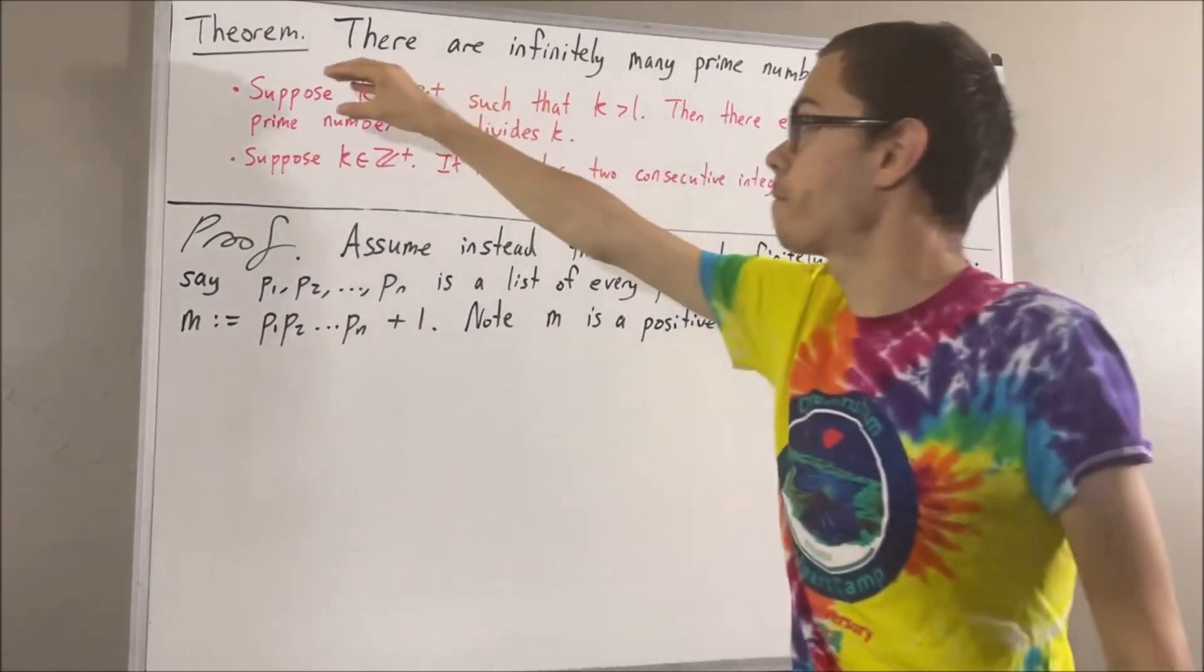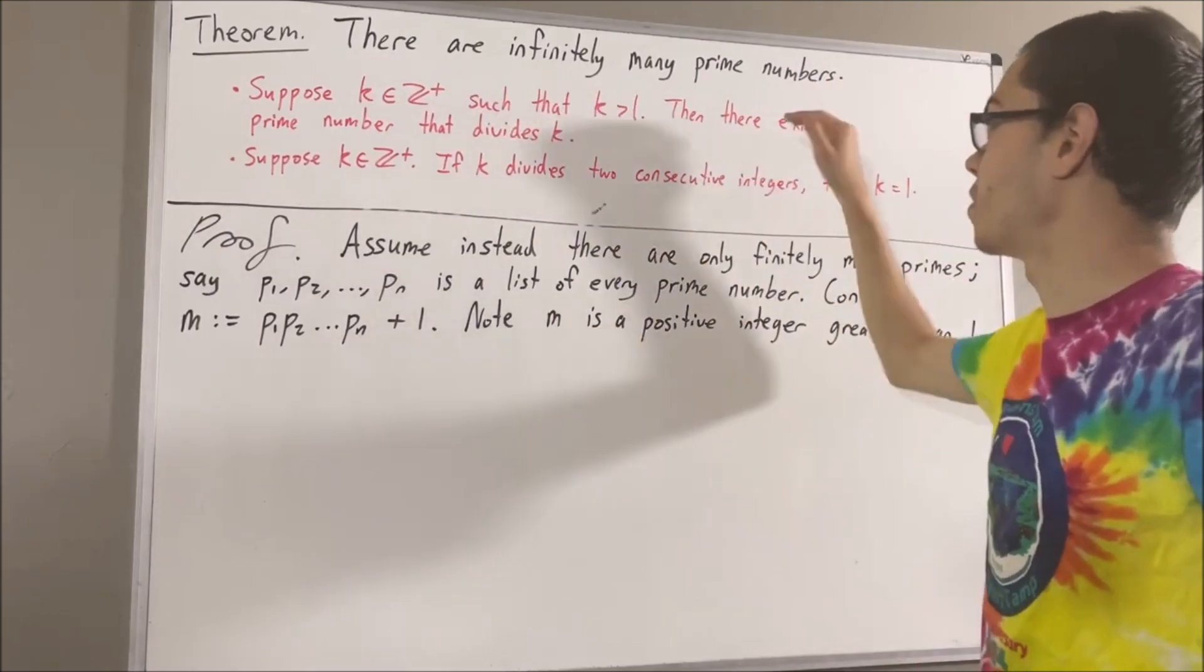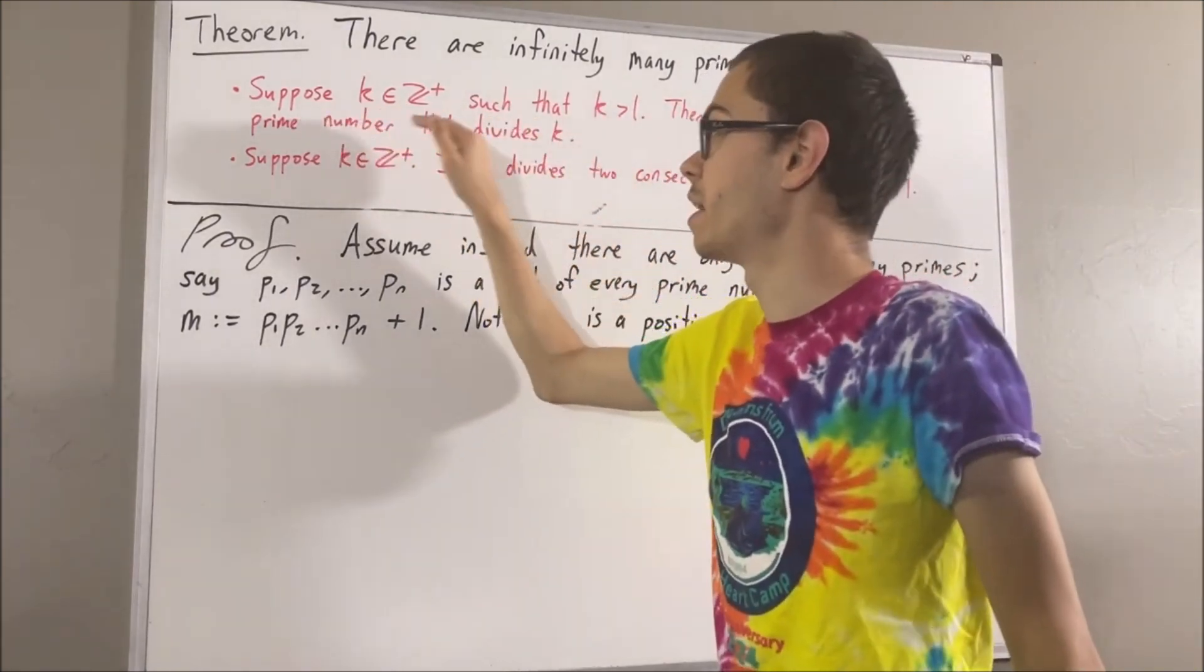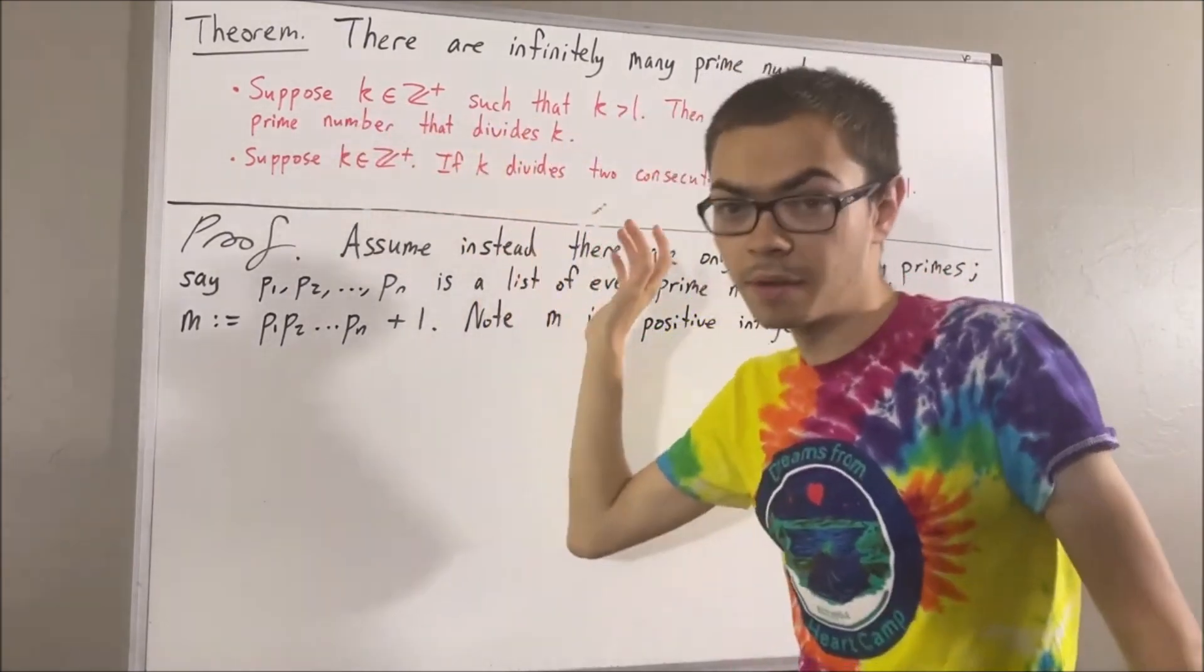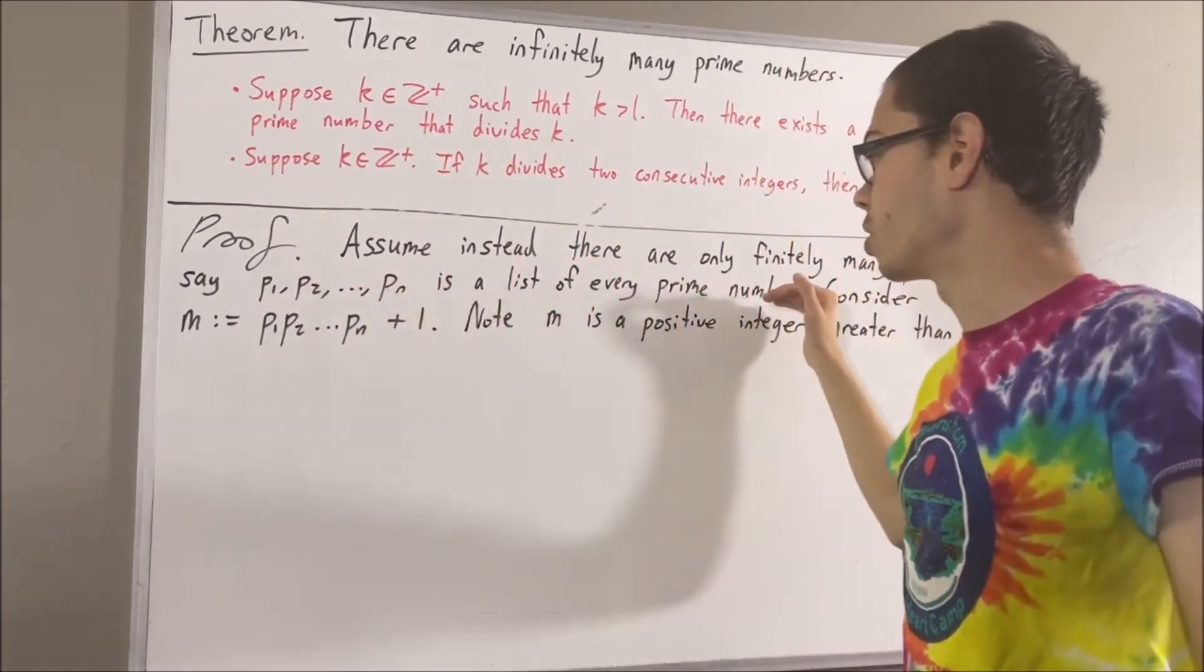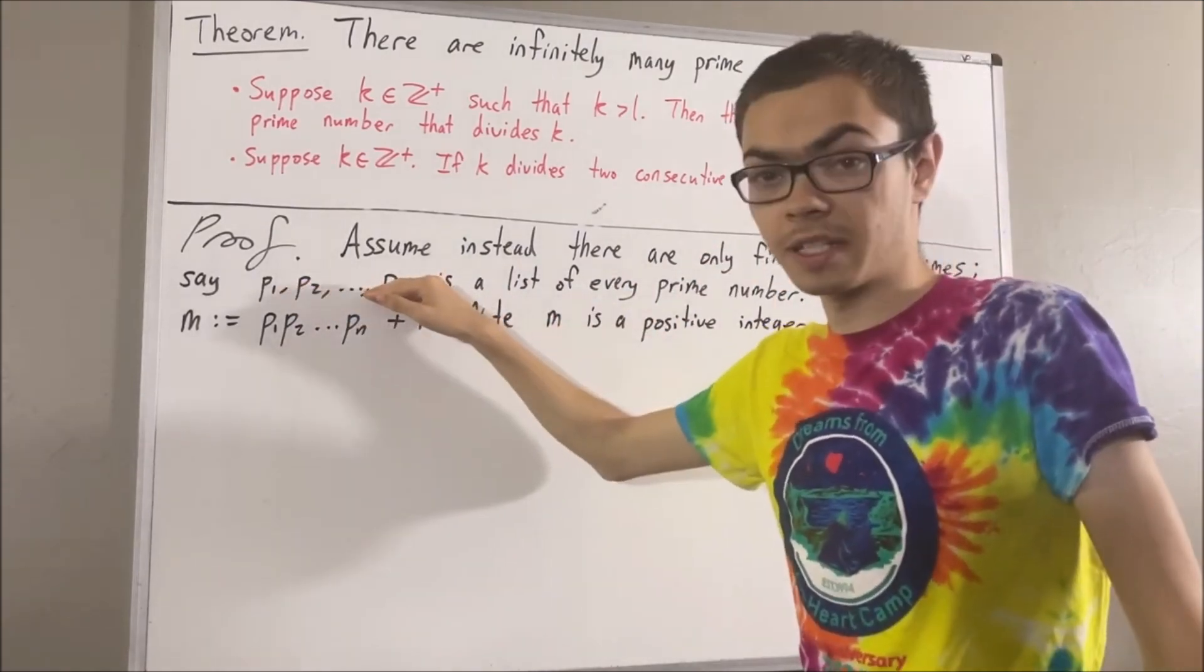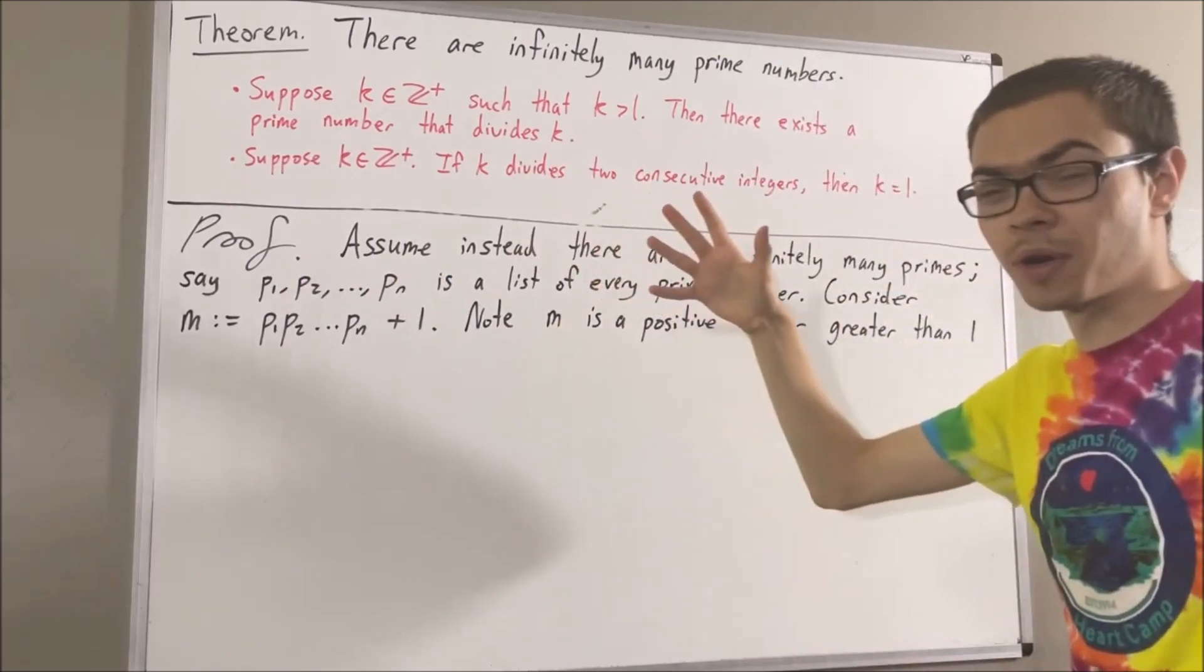So we can apply our first fact to n. So we have that there exists a prime number that divides n. And this is a list of every prime number, so the prime number that divides n must be somewhere in this list. So we'll call that prime number pi.